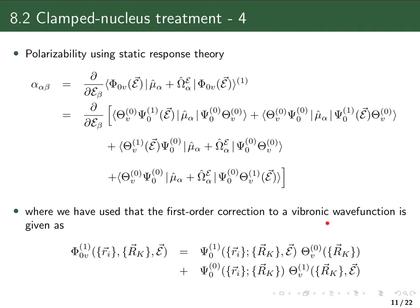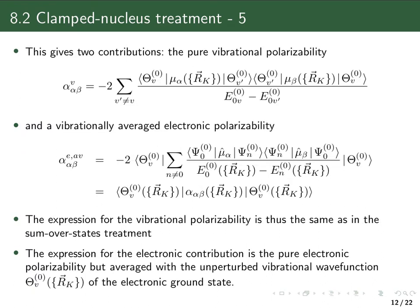More explicitly, the first-order correction to the vibronic wave function, written as a product under the Born-Oppenheimer approximation, is either a first-order electronic wave function times a zeroth-order nuclear wave function, or a zeroth-order electronic wave function times a first-order nuclear wave function. This yields four terms, two of which are equivalent and can be combined, giving a factor of two, leaving effectively two distinct contributions.